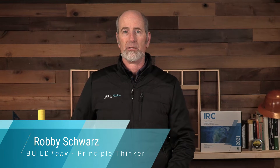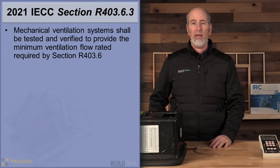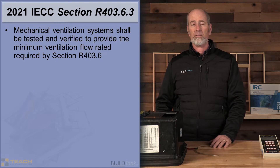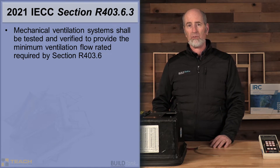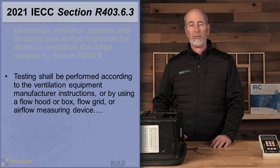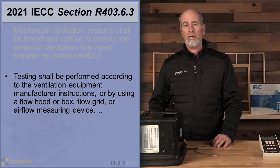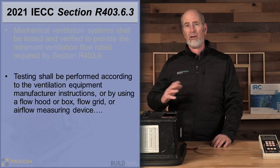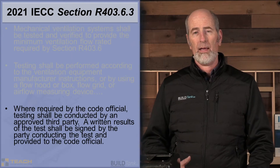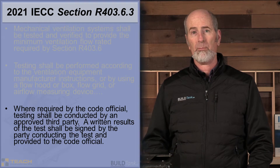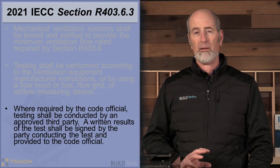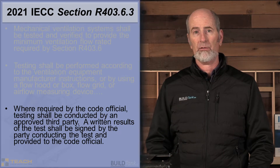Hi, my name is Robbie Schwarz, and we're here today to talk about testing ventilation systems. We need to know about this because the 2021 IECC has a new requirement asking us to verify that ventilation systems in our house — spot ventilation in bathrooms, kitchens, and laundries, and whole house mechanical ventilation — are actually delivering the correct air from inside to outside the house. The code requires this test be performed by an independent third party, who then reports results back to the code official.